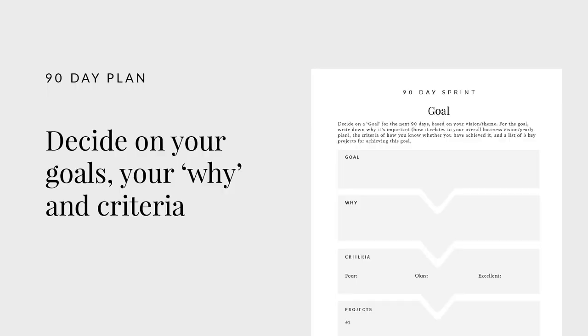The next step is to decide on your goals. You can have just one goal, because we'll be breaking it down into projects and then actions. Or you can have up to three — I would say no more than three, otherwise you'll really overwhelm yourself within what is just a three-month period. You'd also be surprised how much you can achieve in that time. I've also made a space for you to write your 'why' — the reason for setting the goal. This is really important for motivation when you are actually doing the smaller action steps.